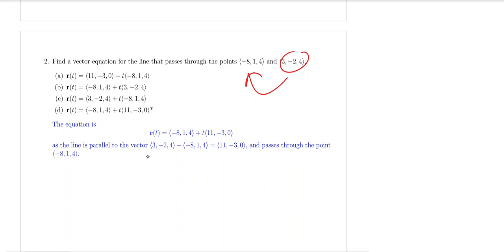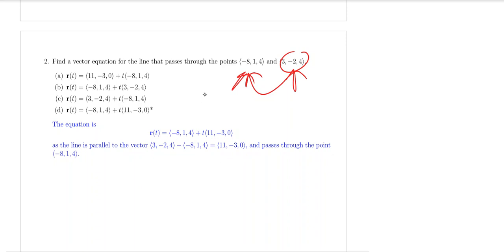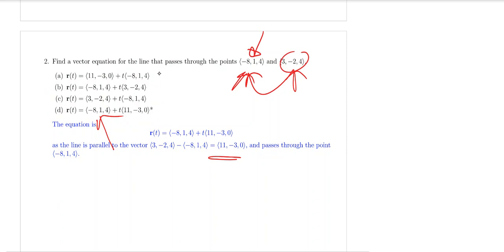So if you take the subtraction of this particular point from this one, you will get this as your directional vectors. Once you have the directional vectors, you can pick any of the points here. Because we are doing multiple choice questions, the closest one that matches the solutions is this one. So we are picking this as the point that is on the line, and the directional vectors is given here. You can see that answer choices A, B, and C all have the wrong directional vectors, so the obvious answer will be D.